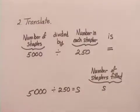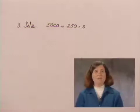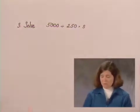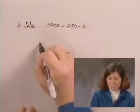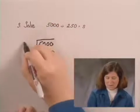Now we're ready to go to step 3 of the process, which is to solve the equation for S. In this case, to solve for S we need to carry out the division. We need to divide 5,000 by 250.